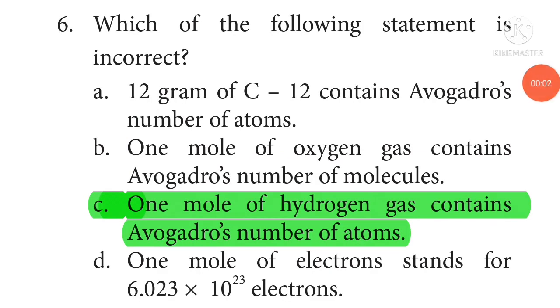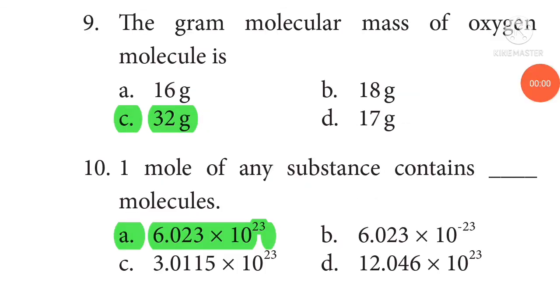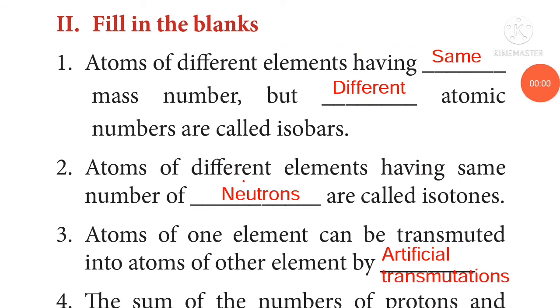Which of the following statement is incorrect? One molecule of hydrogen gas contains Avogadro's number of atoms. In the nucleus of calcium with atomic number 20 and mass number 40, there are 20 protons and 20 neutrons. The gram molecular mass of oxygen molecule is 32 gram. One mole of any substance contains 6.023 into 10 power 23 molecules.